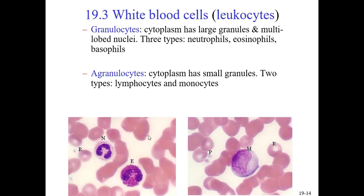In a blood smear, the pinkish-red small circles are red blood cells. The white blood cell labeled 'N' is a neutrophil. The large, darkly stained white blood cell with visible granules is an eosinophil, and there's also a monocyte visible. Agranulocytes still have granules, but they're relatively small and don't stain as visibly. Granules are storage vesicles for enzymes and chemicals. The two types of agranulocytes are lymphocytes and monocytes.